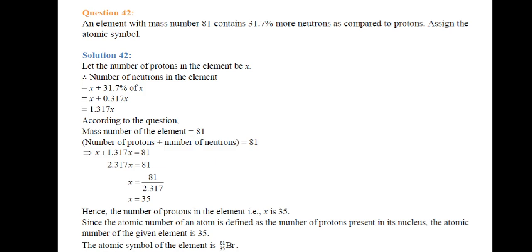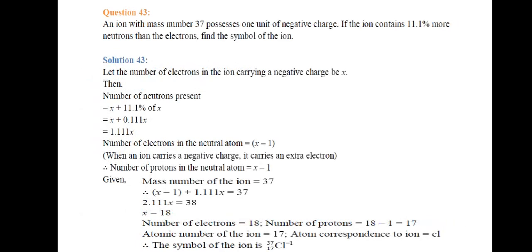x equals 35. Hence the number of protons is 35, so the atomic number is 35. The element is Bromine. The atomic symbol is ₃₅Br⁸¹. Next question: an ion with mass number 37 possesses one unit of negative charge.